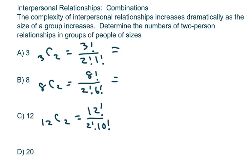And the 20 is 20 choose 2, which is 20 factorial over 2 factorial times 18 factorial.